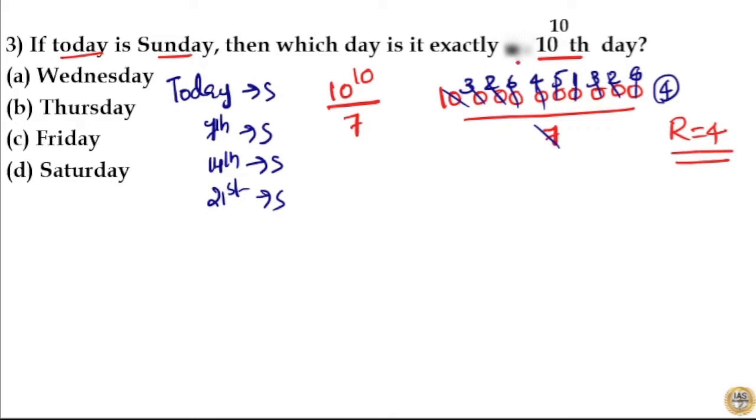Remainder 4 means there are 4 odd days in 10 raised to 10 days. So if today is Sunday, that means in 10 raised to 10 days, there are 4 odd days: 1, 2, 3, 4. Now 1st odd day will be Monday, 2nd odd day is Tuesday, 3rd odd day is Wednesday, 4th odd day is Thursday.